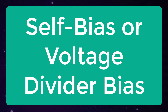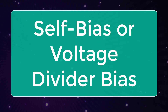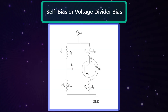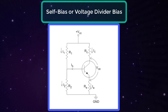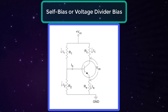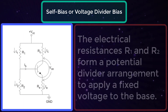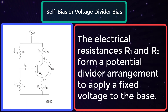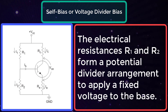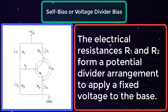Self bias, or voltage divider bias. The circuit diagram for self bias, as shown, is the most widely used biasing circuit. The electrical resistances R1 and R2 form a potential divider arrangement to apply a fixed voltage to the base.